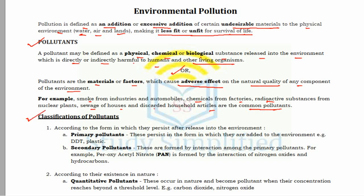Pollutants are classified using a number of different criteria. The first criteria is according to the form in which they persist after release into the environment. Under this classification there are two types: primary pollutants and secondary pollutants. Primary pollutants persist in the form in which they are released or added to the environment — there is no change in them. Examples include DDT and plastic.